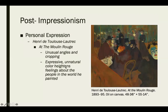Henri de Toulouse-Lautrec is another personal Expressionist. 'At the Moulin Rouge' uses unconventional color to convey ideas — all the skin colors of the figures are very sickly, possibly reflecting the type of artificial light in the bar. His expressive, unnatural color heightens feelings about the people in his world, who were usually upper-class individuals.